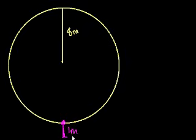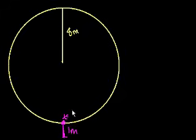Assume that Jacob and Emily's height h above the ground is a sinusoidal function of time, where t equals 0 represents the lowest point on the wheel. So t equals 0 is right here at the lowest point. Write an equation for h.